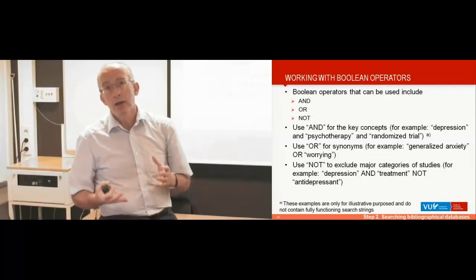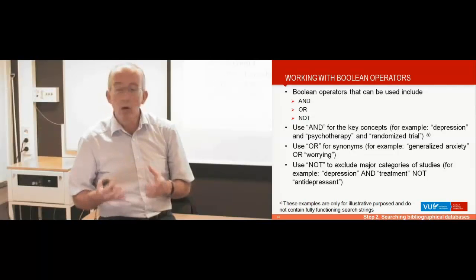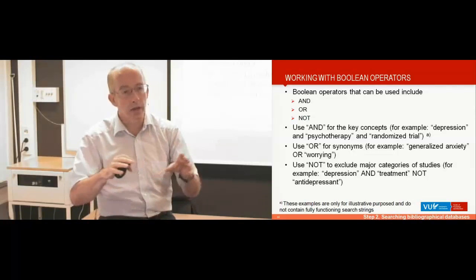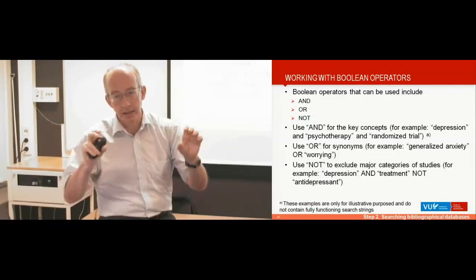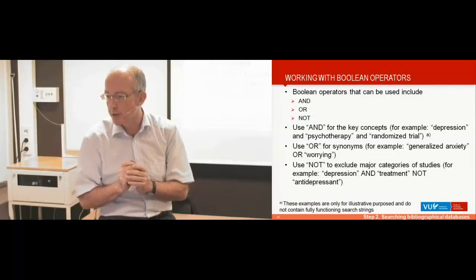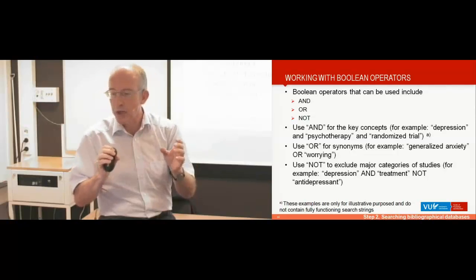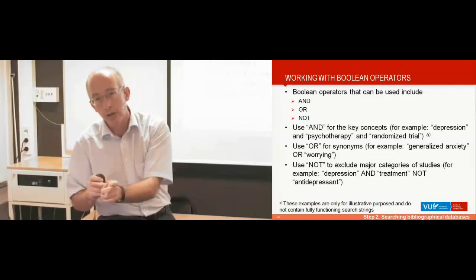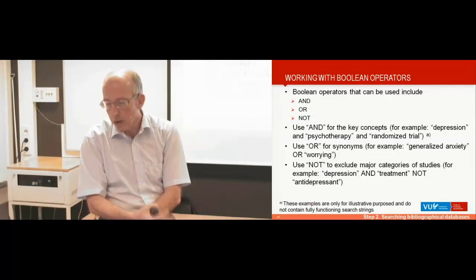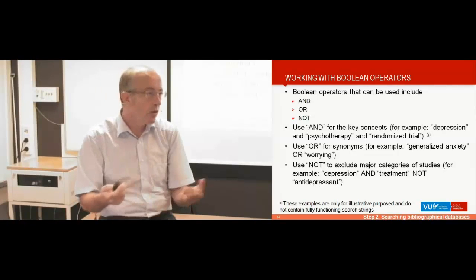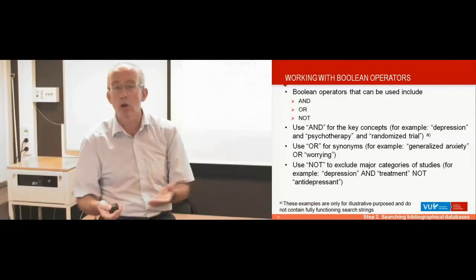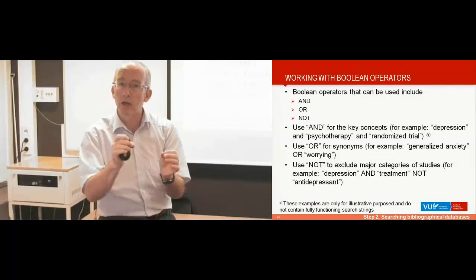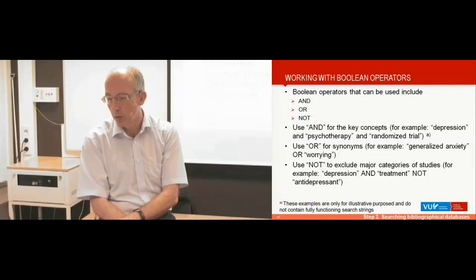An important issue in doing searches is working with Boolean operators — it's just logic. You can use AND, OR, and NOT. AND is used when you want to identify abstracts that contain both key concepts — for example, if you look for psychotherapy for depression in randomized trials, you include depression AND psychotherapy AND randomized trial. OR is used for synonyms — for example, if you search for generalized anxiety disorder, you could use terms like 'generalized anxiety' OR 'worrying,' and abstracts containing either will be included.